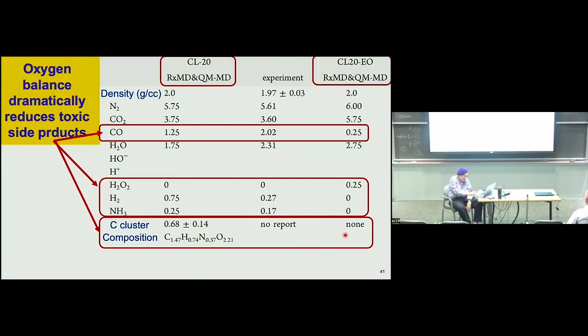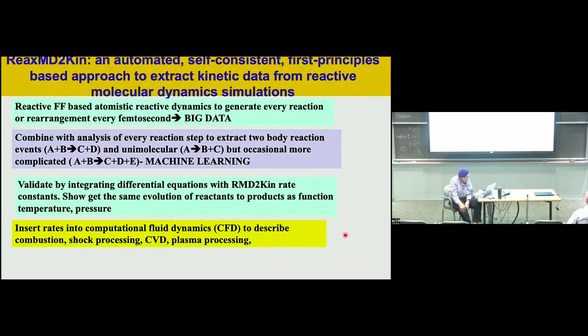Switching gears to getting kinetics of reactions: we have force fields that can do reactions. Can we get the kinetics out of those force field calculations? We can do the reactions with the reactive force field and we get a lot of products. The question is how do we get the kinetics out of that? What we do is follow along and look at where an intermediate disappears — something happened to it — then look at what other intermediate disappeared at the same time and what products they gave.